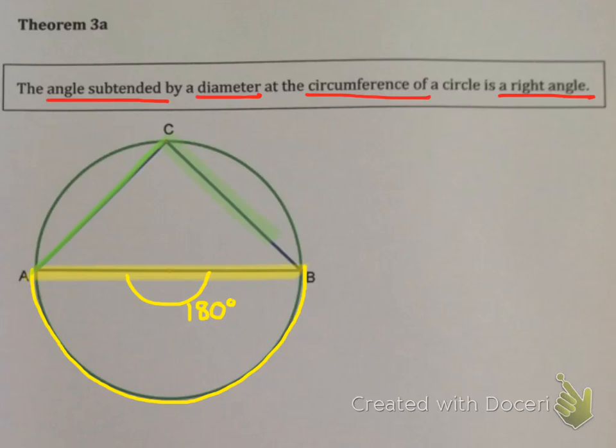Well that means theorem 2 would have told me that the angle at the center is always twice the angle at the circumference. So any angle subtended at the circumference by this diameter would be 90 degrees.